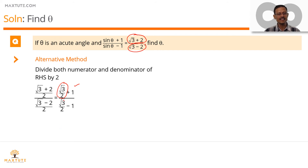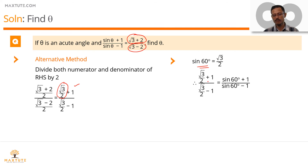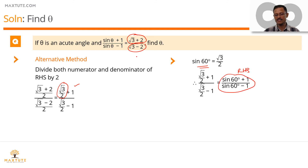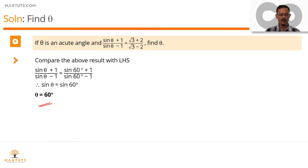What angle in sin corresponds to √3/2? sin 60° = √3/2. So we replace √3/2 with sin 60°, giving the RHS as (sin 60° + 1)/(sin 60° − 1). Comparing with the LHS, (sin θ + 1)/(sin θ − 1) = (sin 60° + 1)/(sin 60° − 1), so it's obvious that sin θ = sin 60°, therefore θ = 60 degrees.